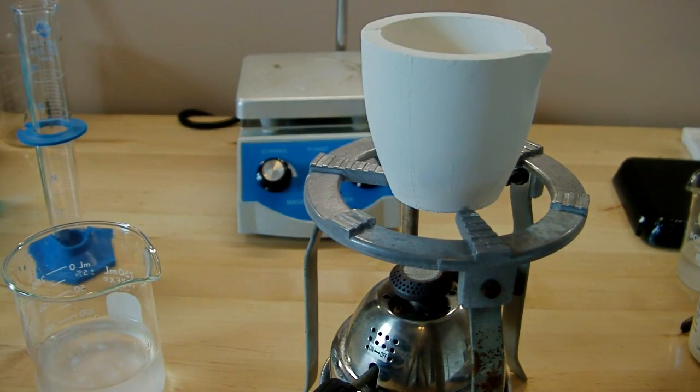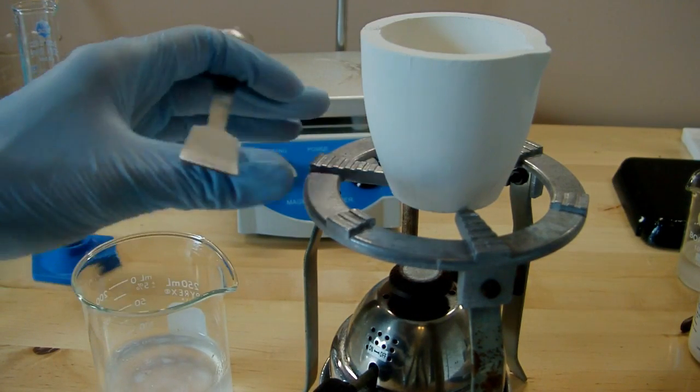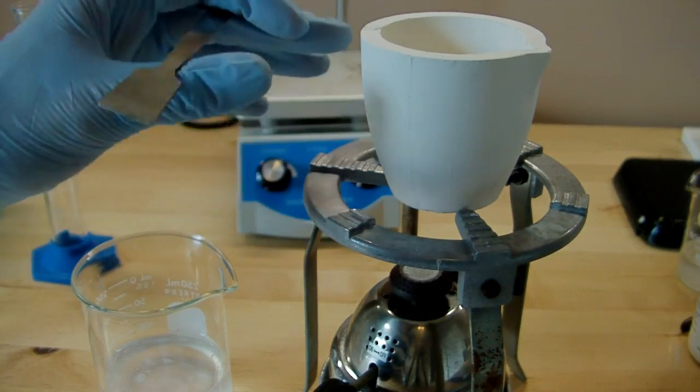Now that we have our orthosilicic acid, the next step is to dehydrate it, drive off some of the water. To do that, I'm going to heat this with my burner in a crucible.